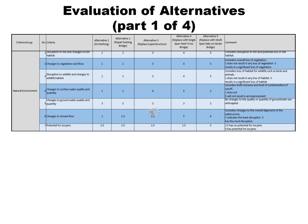This slide looks only at the criteria group related to the natural environment. There are seven criteria in this group: Criteria 1, disruption to fish and changes to fish habitat; number 2, changes to vegetation and flora; number 3, disruption to wildlife and changes to wildlife habitat; number 4, changes to surface water quality and quantity; number 5, changes to groundwater quality and quantity; number 6, changes to stream flow; and number 7, potential for ice jams. For detail on individual rankings, please reach out to any of the contacts listed at the end of this presentation.